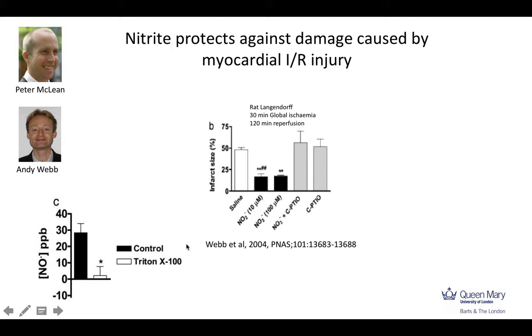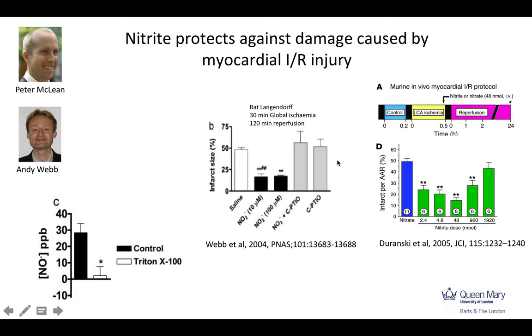We also gave nitrite just prior to reperfusion and found a similar level of protection — which is actually more relevant for the clinical setting. We also looked at where that nitrite reduction might be taking place. We took isolated hearts, sampled the NO being generated, and measured it using chemiluminescence. Comparing hearts subjected to ischemia-reperfusion injury with hearts from which we had selectively removed the endothelium using a detergent protocol, we saw a profound suppression of NO generated from nitrite. This indicated that a large proportion of the protective NO was actually coming from nitrite reduction taking place at the endothelium.